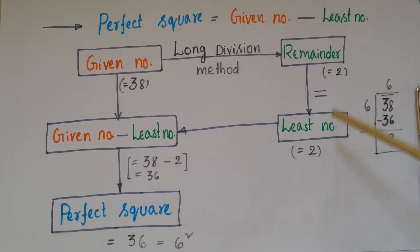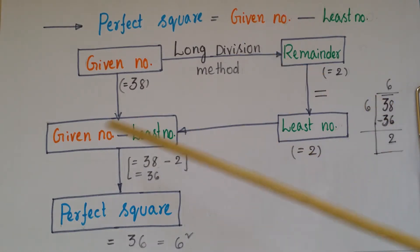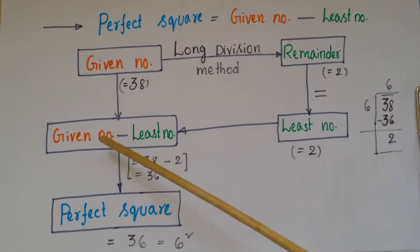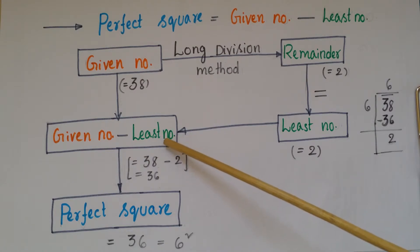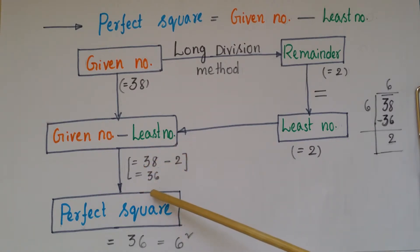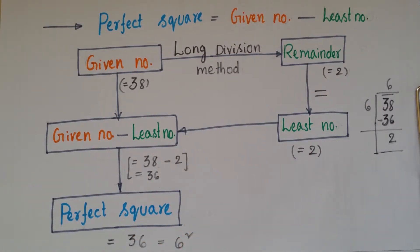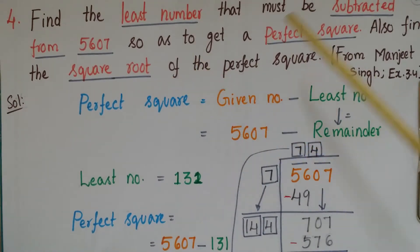The remainder is 2, so we take that as the least number. From the given number, we subtract this least number: 38 minus 2 equals 36. So 36 is the perfect square, because 36 can be written as 6 squared.